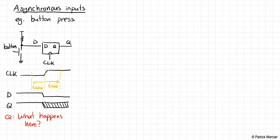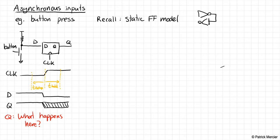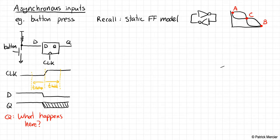To understand this, let's recall the static flip-flop model. We're assuming a static flip-flop, not a dynamic flip-flop. Recall this was basically two back-to-back inverters in positive feedback. We drew this voltage transfer curve, then the opposite voltage transfer curve, and we had different stable operating points: A, B, and a weird point in the middle called the metastable point C.